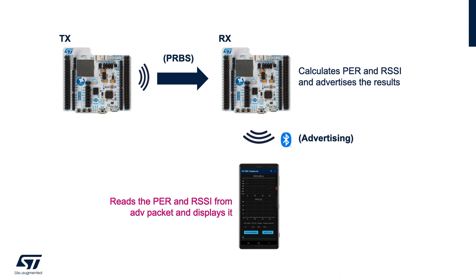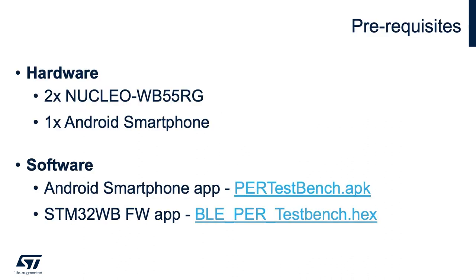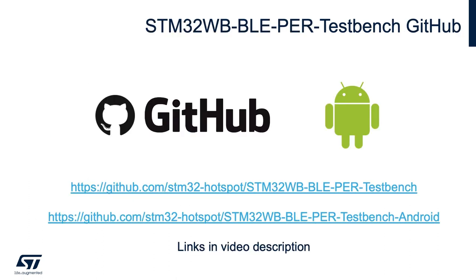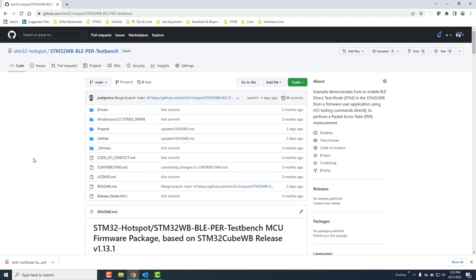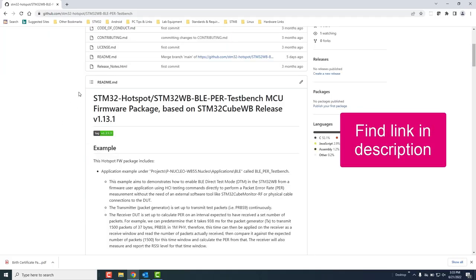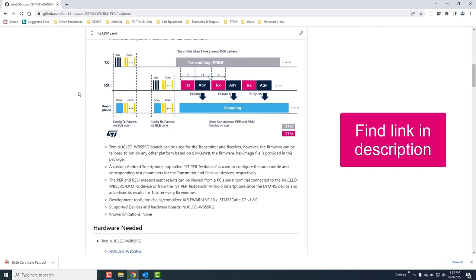Note that this method does not use a BLE connection, but rather uses the direct test mode or DTM protocol to transmit and receive test packets and measure the packet error rate and RSSI on the receiver. The custom utility is composed of a custom smartphone app called BLE PER TestBench, which is used as the main user interface, and a custom firmware application that runs on the STM32WB SOC. Both projects are available on the STM32Hotspot GitHub, and detailed instructions for how to install and run the utility can be found under the firmware project repo.